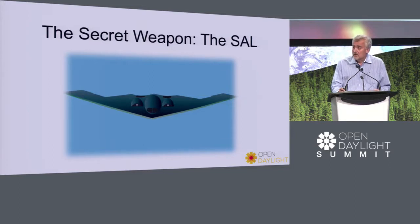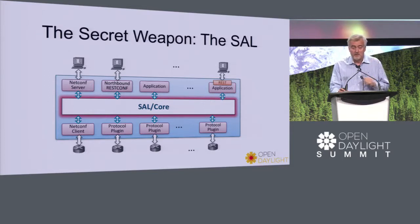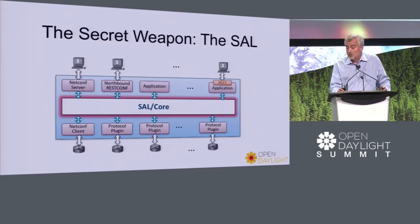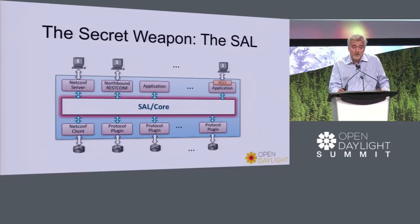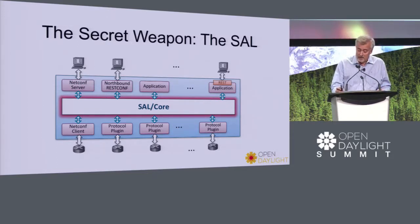In hindsight, that was the right decision. The SAL layered the system nicely into applications, the SAL itself as the secret weapon, and then protocol plug-ins. This enabled the controller to talk not only OpenFlow on the southbound, but any protocol that the designers or community decided to implement. It also allowed people to put applications on top of the controller that the designers would not necessarily know at the beginning — making the system much more flexible in terms of what functionality could be done with the controller.